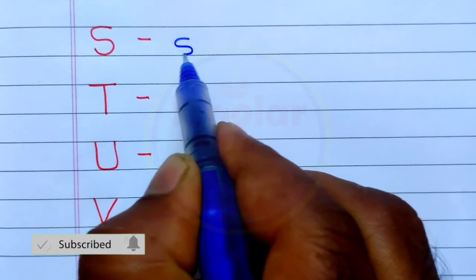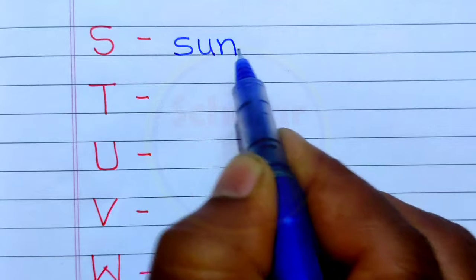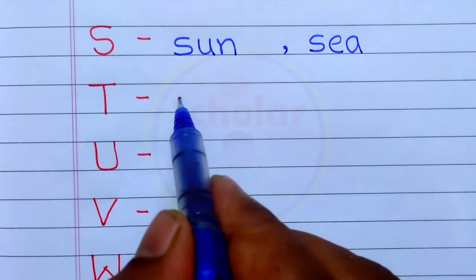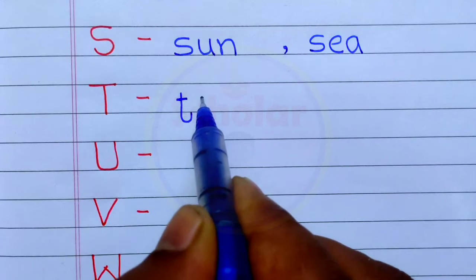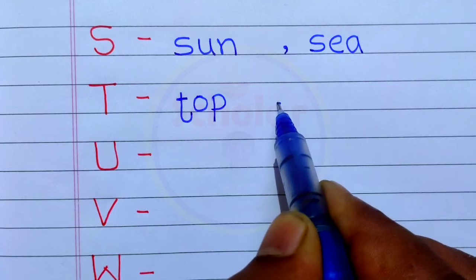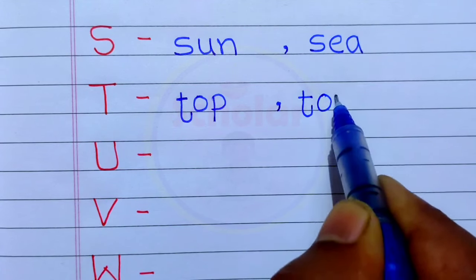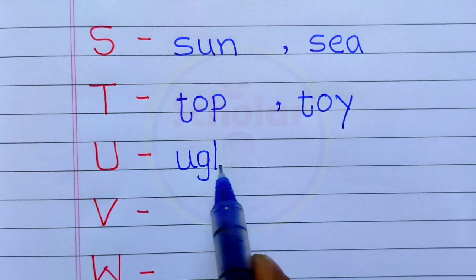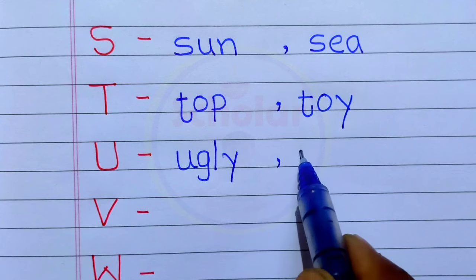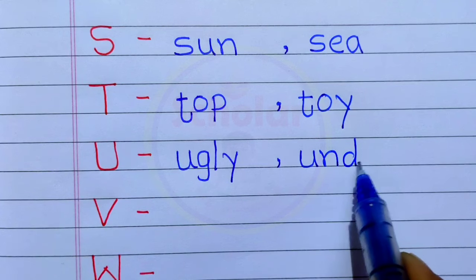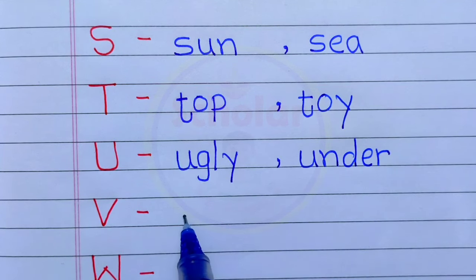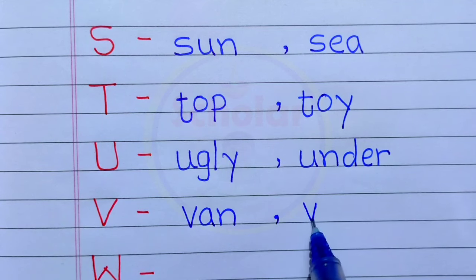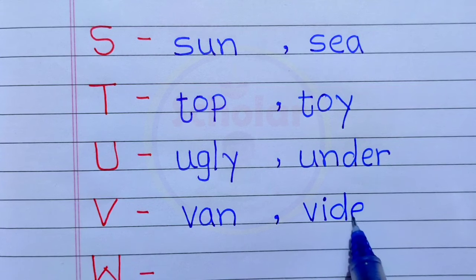S - Sun, Sea. T - Top, Toy. U - Ugly, Under. V - Van, Video.